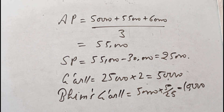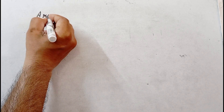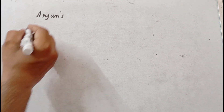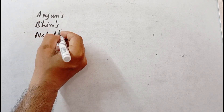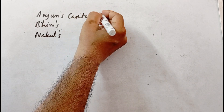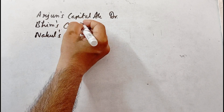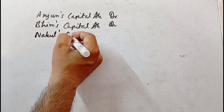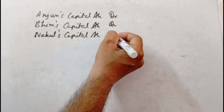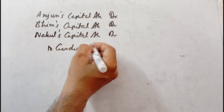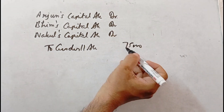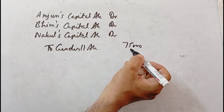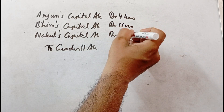Now we have our journal entries. First entry: goodwill write-off. Arjun, Bhim, and Nakul — all three partners' capital accounts are debited, and goodwill account is credited. The old goodwill ratio is 14 is to 5 is to 6, total 25. 75,000 divided by 25 is 3,000. So Arjun's share is 3,000 into 14 = 42,000; Bhim's is 3,000 into 5 = 15,000; Nakul's is 3,000 into 6 = 18,000.